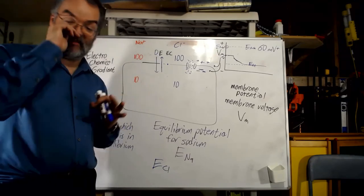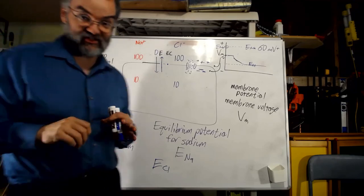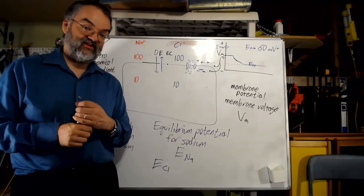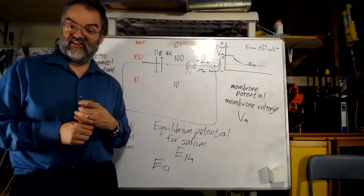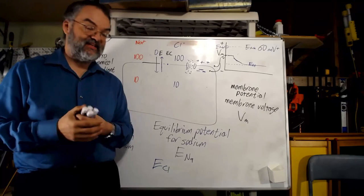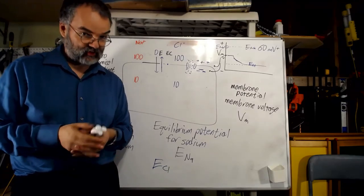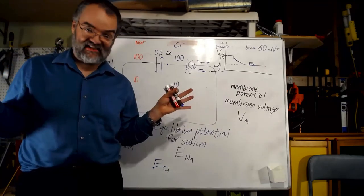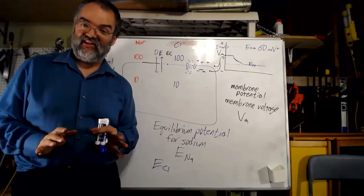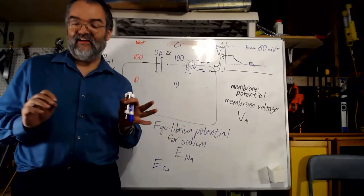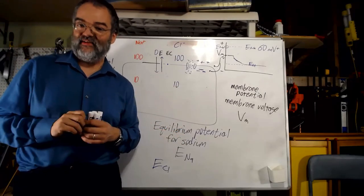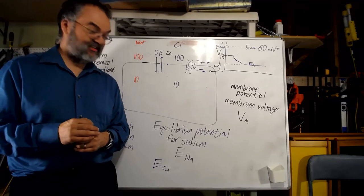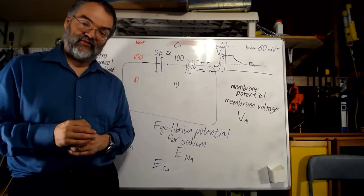Alright, that's the end of core concepts. Good job. The next unit is the nervous system, which happens to be my particular favorite — although I love all of the stuff in this class. I love physiology and I love teaching it. The nervous system is my favorite. I hope that was good, and I will see you in the next unit.